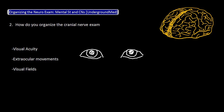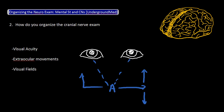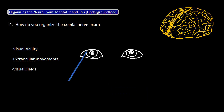Let's start with the eyes, where you should perform the following three tests: visual acuity with your vision chart; extraocular muscle movements — remember you're supposed to have the patient move his or her eyes in an H pattern to test all the muscles; and lastly, visual fields using your fingers. With these three tests, you have already taken care of cranial nerves two through six.